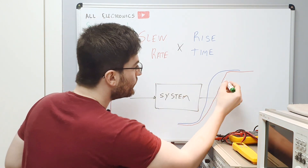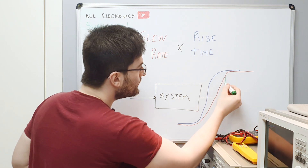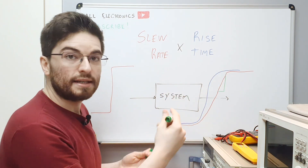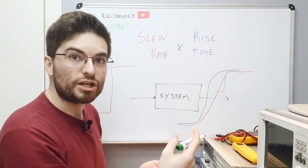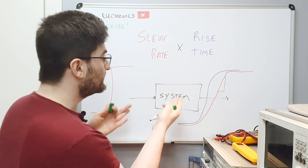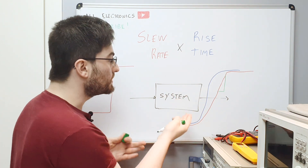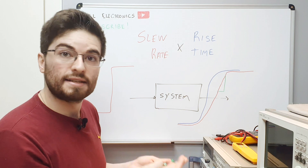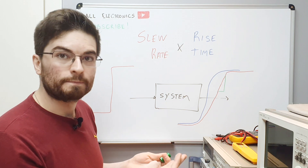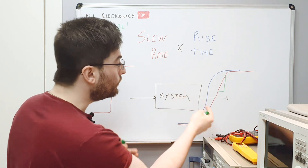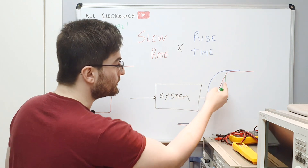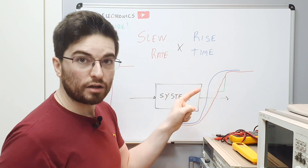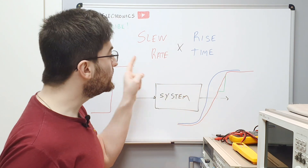The signal has a slew rate—a maximum rate it can change. Now we have distortion because the system is not working as a first order system anymore; it's working as a nonlinear circuit. The maximum rate that the system can swing its output is the slew rate.